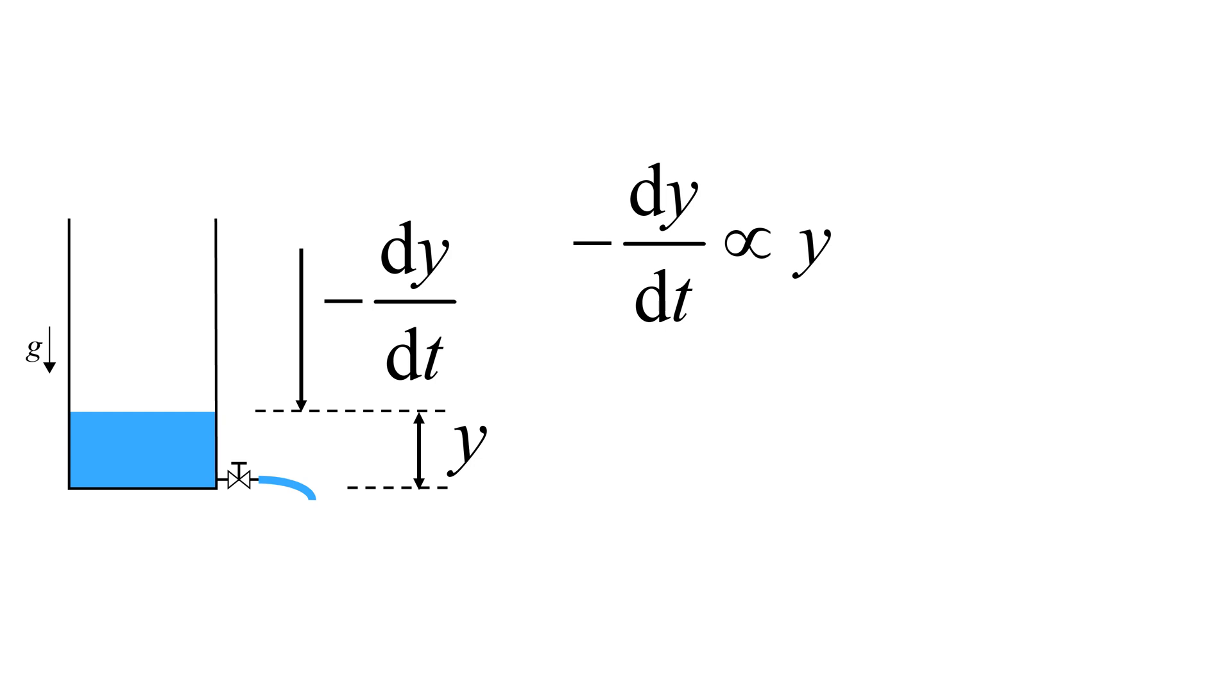I came up with minus dy over dt is proportional to y. To further develop the equation, we can introduce a coefficient alpha, which is related to physical properties such as water tank cross-section area, hydraulic resistance of the valve, gravitational acceleration, etc.